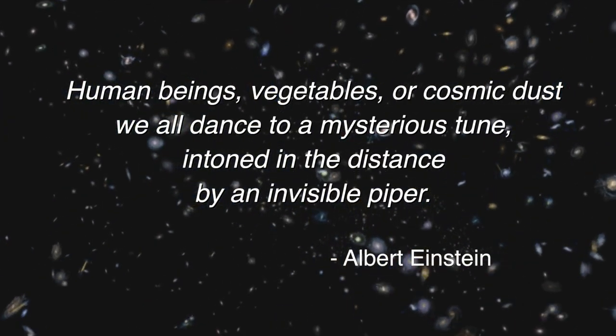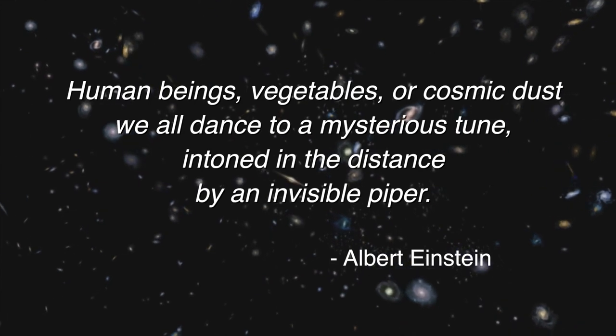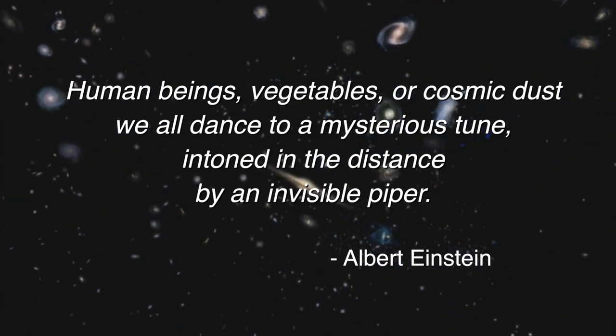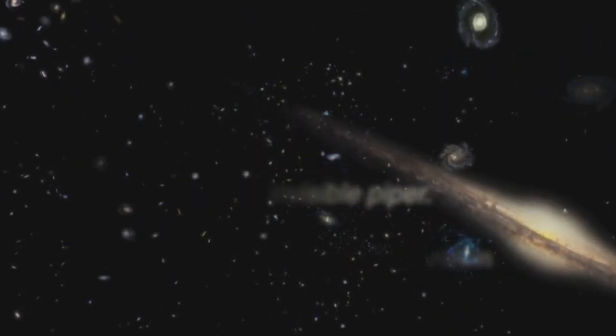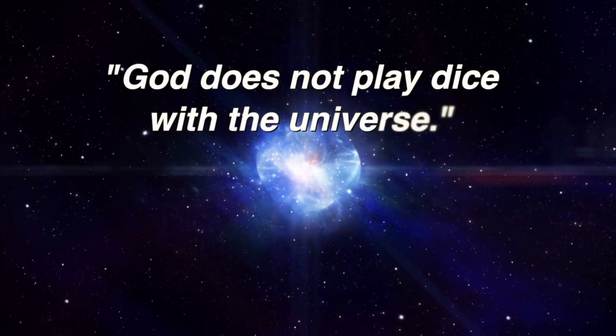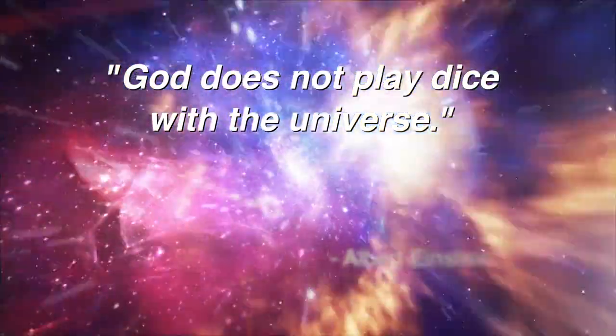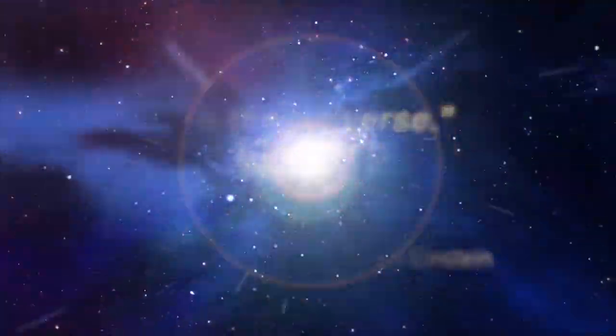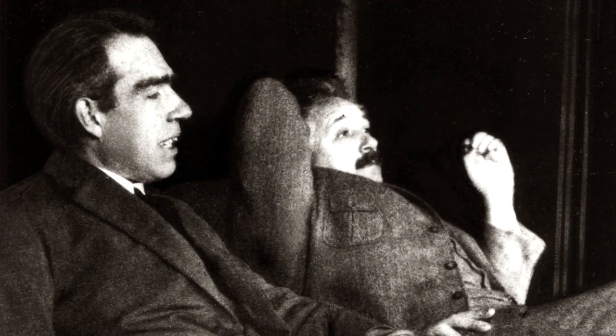Einstein was convinced that a probabilistic theory could never explain the natural world. He believed in what he called an invisible piper, and that everything in the universe danced to its tune. In Einstein's view, quantum mechanics might be a good step towards a unified theory, but it could not be complete. He famously said, God does not play dice. Bohr countered, Einstein, stop telling God what to do.